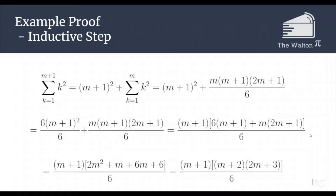So we now are left with m plus 1 squared plus that fraction. In order to combine them, we need to get a common denominator. By rewriting m plus 1 squared as 6 times m plus 1 squared over 6, we are able to combine the two fractions.